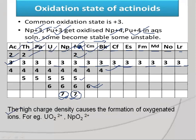Actinoids form oxo-cations, meaning they form oxygenated ions by reacting with oxygen, because of high charge density. For example, UO₂²⁺ and NpO₂²⁺ are examples of oxo-cations. In case of lanthanides, there is no such formation of oxo-cations. So remember: actinoids do form oxo-cations but lanthanides do not.